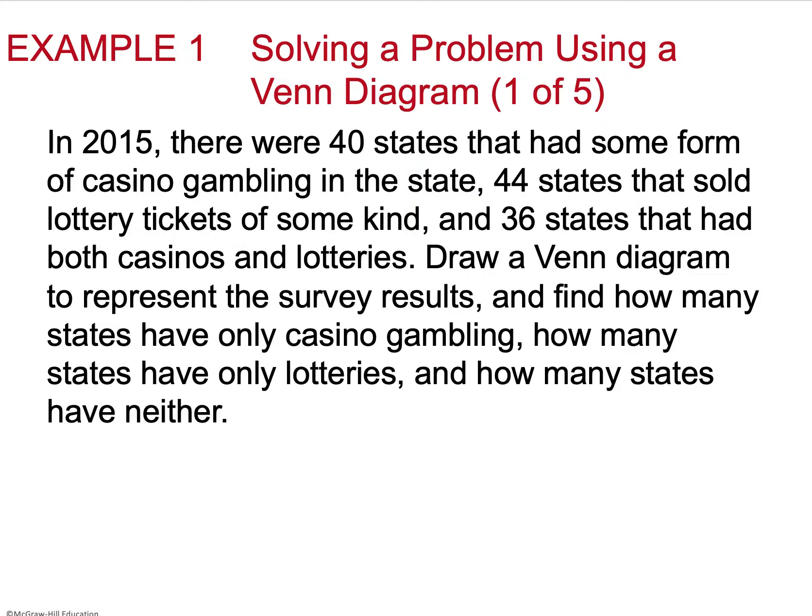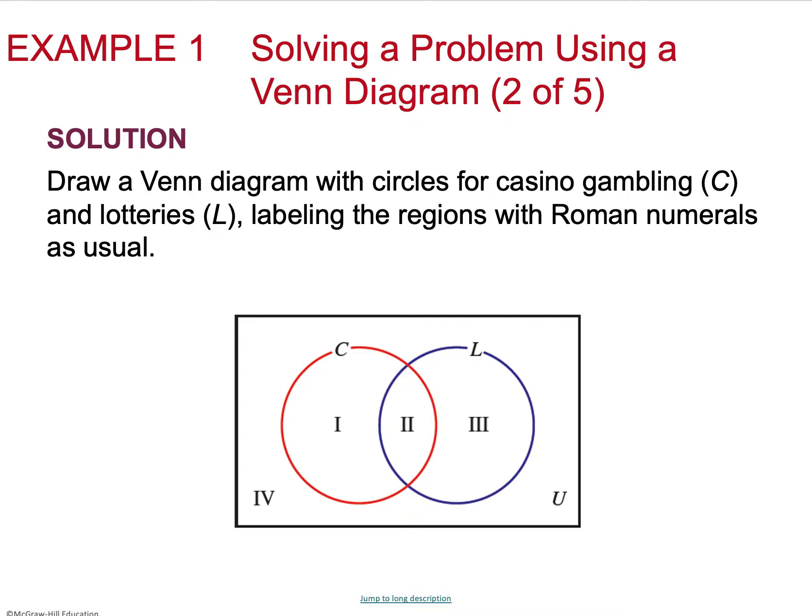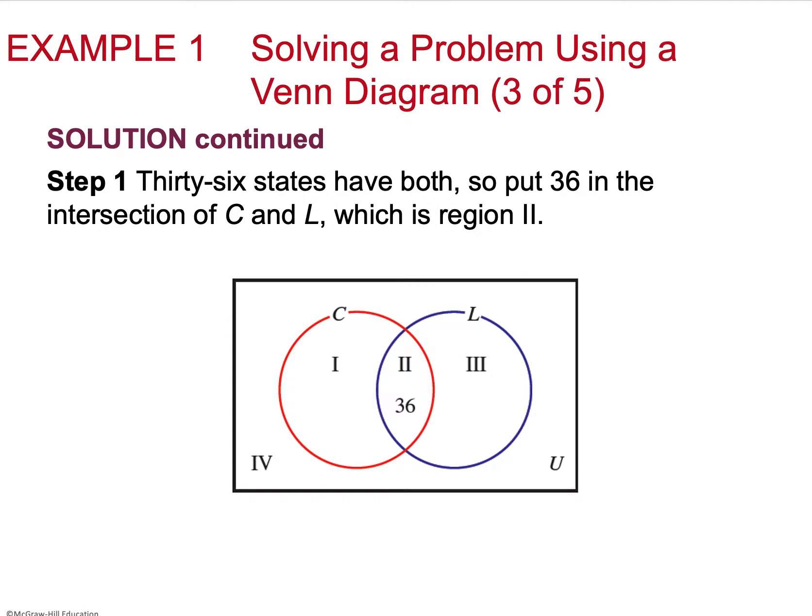So here's the given problem we have. We have 40 states that have some form of gambling, 44 states that sell lottery tickets, and 36 states that have both. So if I want to follow that Venn diagram process, I'm going to go ahead and start off with my diagram that we've been given. We've got regions 1, 2, and 3, and then region 4 is the area outside of both circles. So we're going to follow step 1, and then we're going to go into step 2.